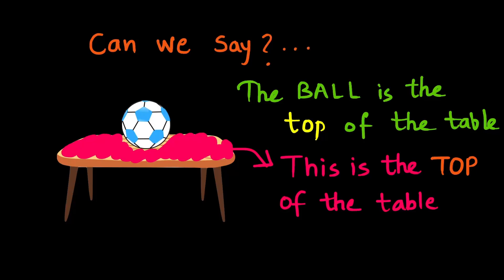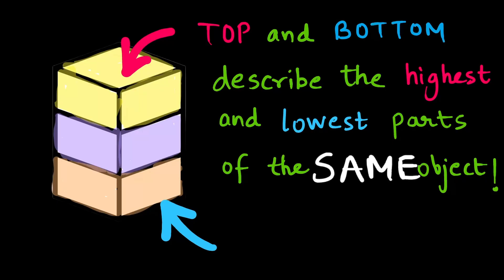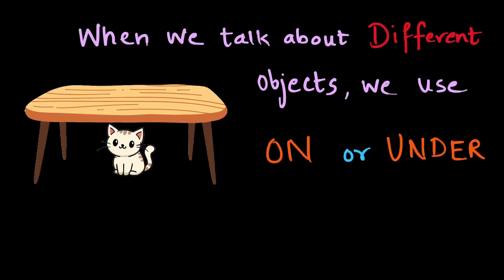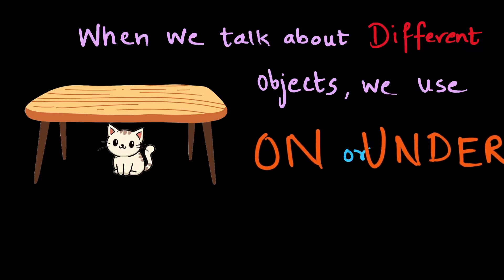When should we use top and bottom, and when should we use on and under? Top and bottom describe the highest and lowest part of the same object. You see in pink the top of the tower, and in blue the bottom — both parts of the same object. When we talk about different objects, like this table and the cat — the cat is not part of the table — in such cases we use on or under. So the cat is under the table.